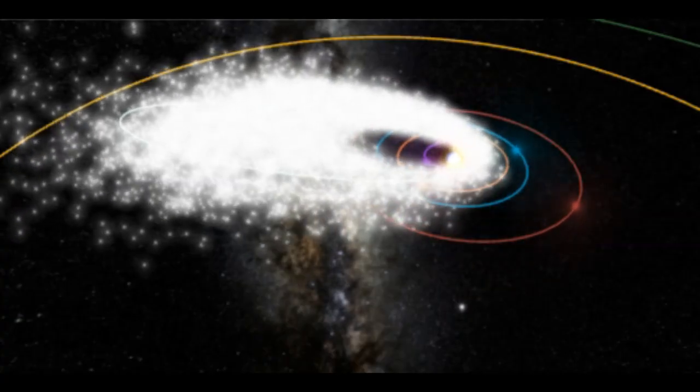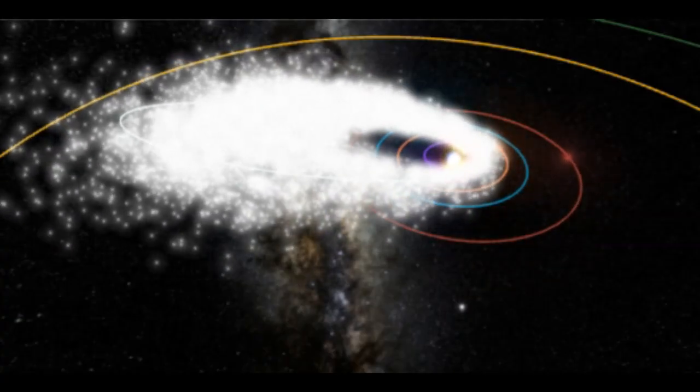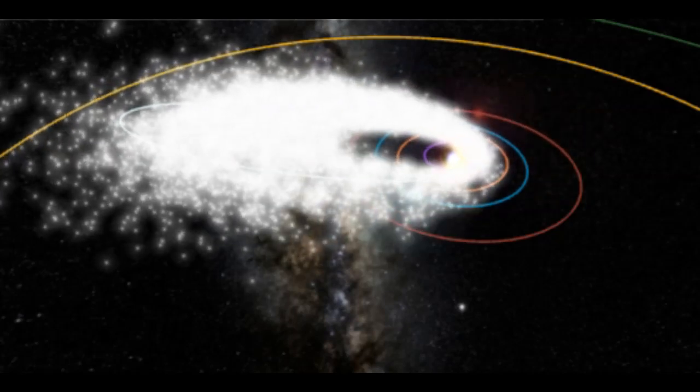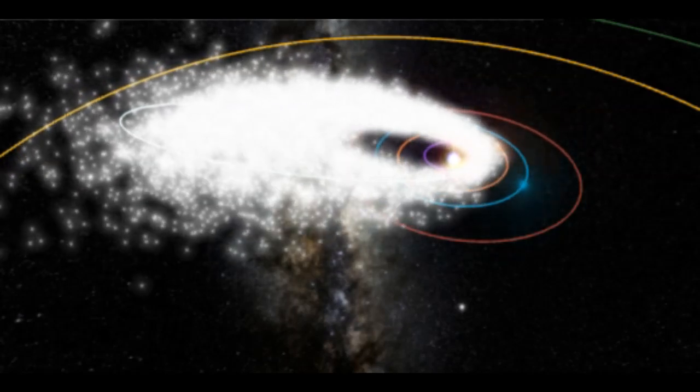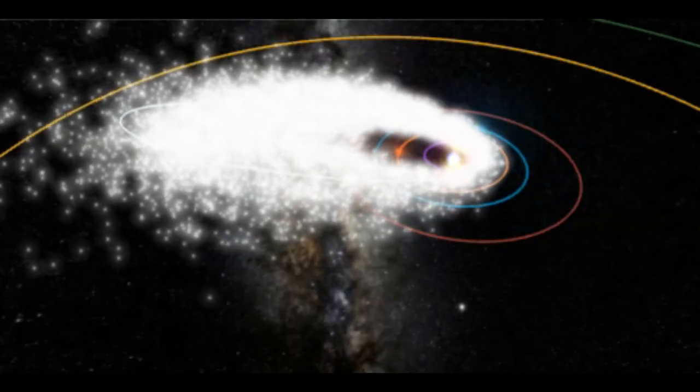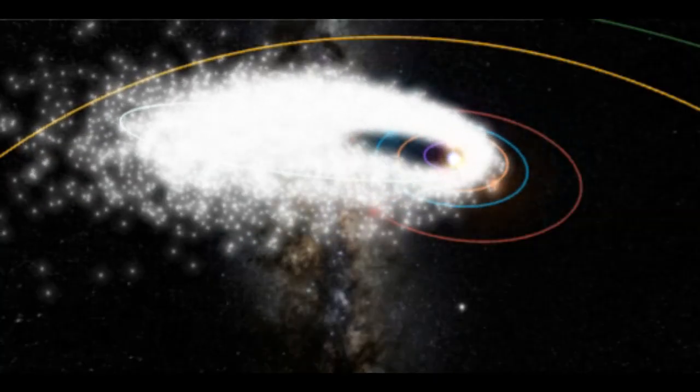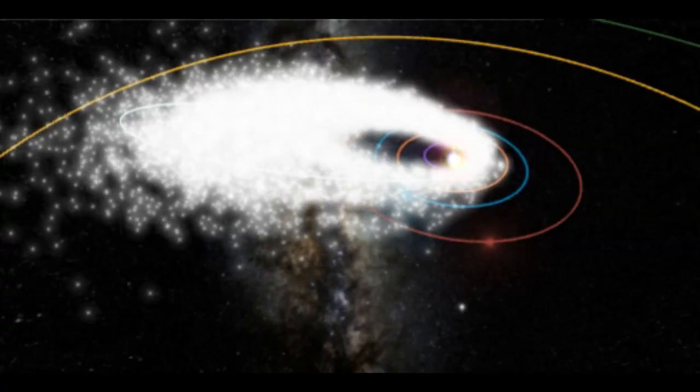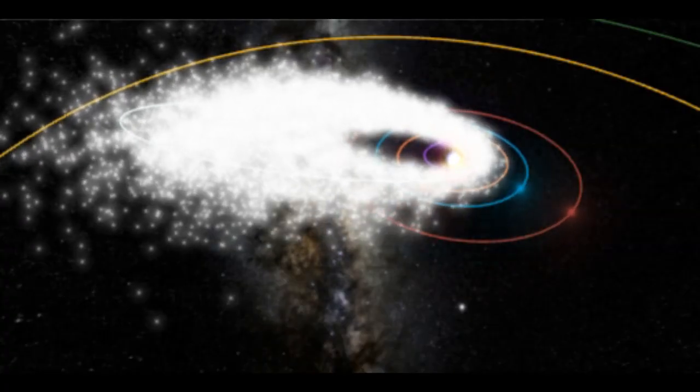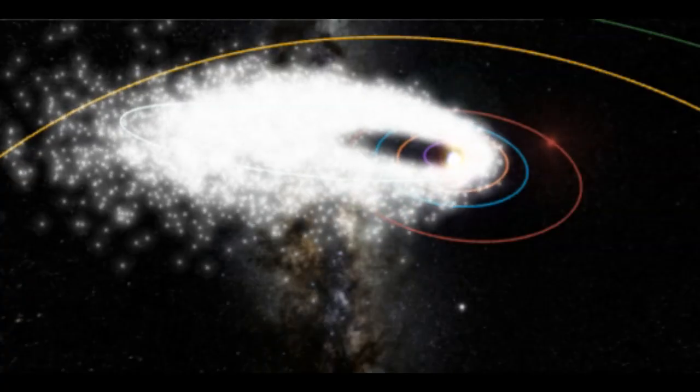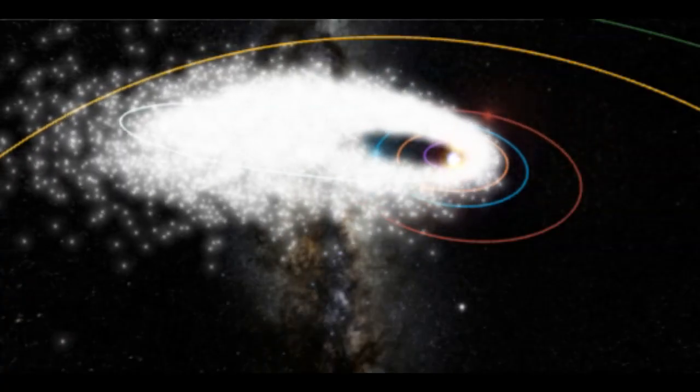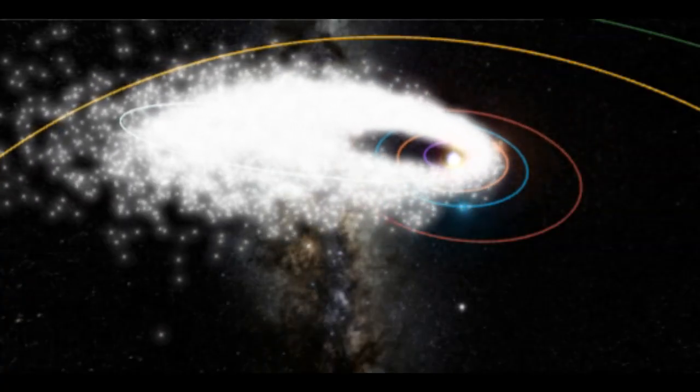is technically known as the Southern Taurids meteor shower and is known for large, slow-moving meteors. The shower peaks in late October and early November, thus its nickname the Halloween Fireball meteor shower. These slow-moving meteors shrink from the constellation Taurus during the weeks around Halloween.